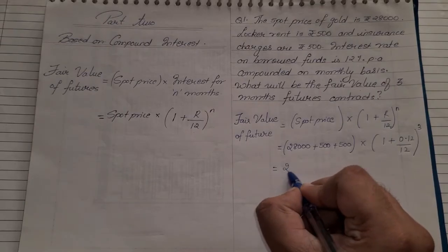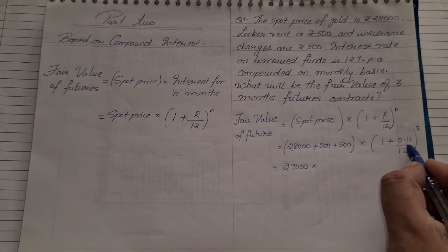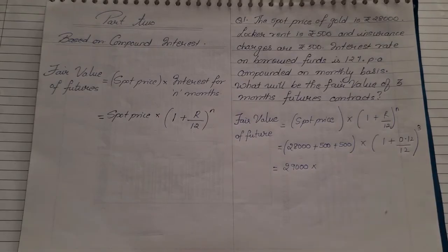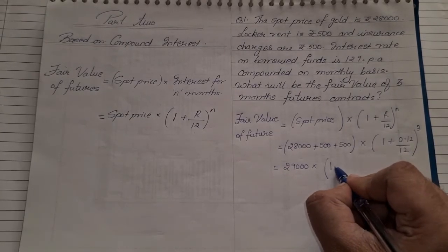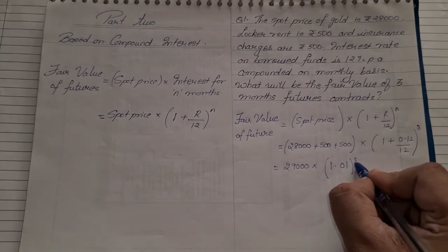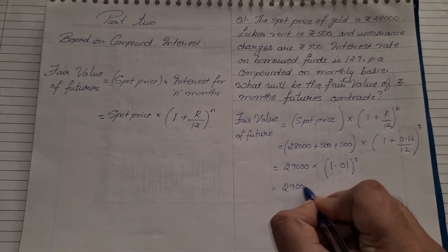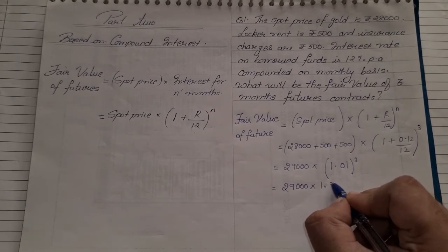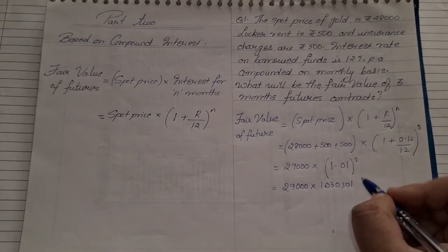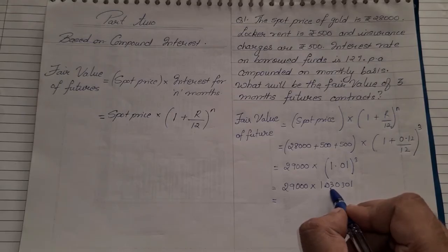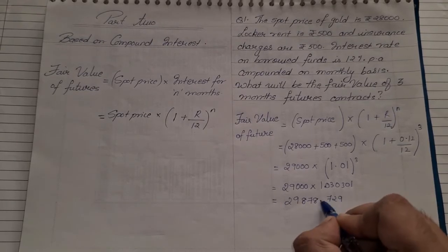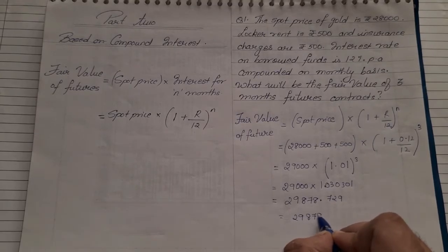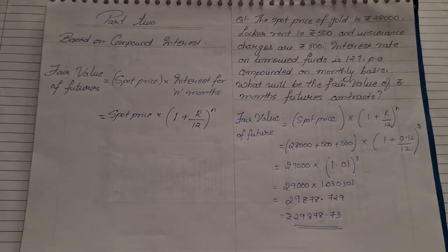28 + 5 + 5 = 29,000. Now 0.12 ÷ 12 = 0.01, so we have 29,000 × (1.01)^3. Cubing 1.01 gives 1.030301. So: 29,000 × 1.030301 ≈ ₹29,878.73. The fair value under compound interest is ₹29,878.73. The only change between simple and compound interest is the interest part — the rest remains the same.